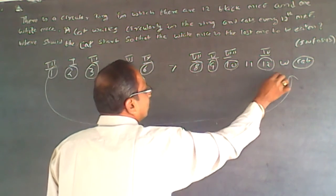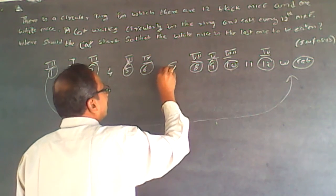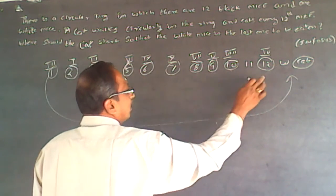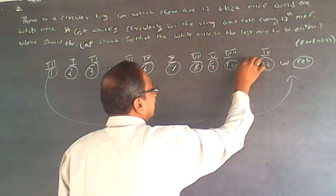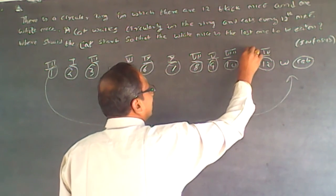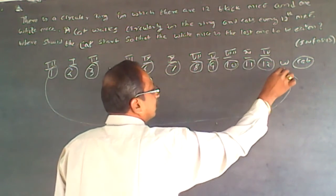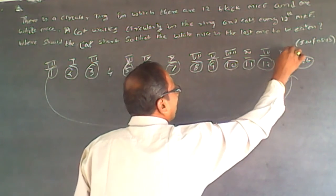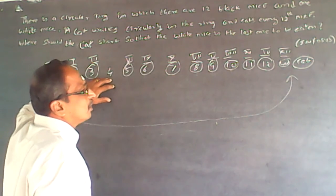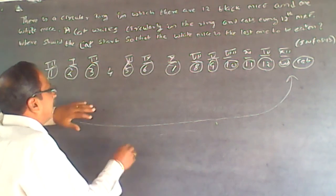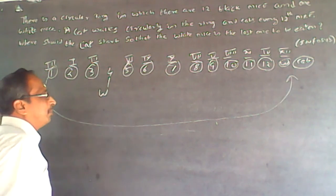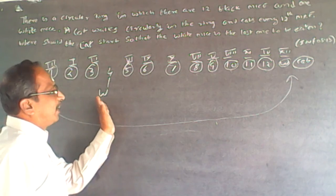Then 1, 2, 3, 4 — this is the tenth one. Then 1, 2, 3, 4 — this is the eleventh one. And then 1 and 2 — this is the last, twelfth one to be eaten. Now what is remaining? The fourth position is remaining. So white has to come here — if I place the white at the fourth position, this will be the last one to be eaten.